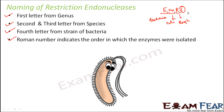Currently we have more than 900 restriction enzymes isolated from over 200 strains of bacteria. Without a specific naming convention it would be very difficult to distinguish between them. That is why we follow such a specific convention for naming these enzymes, and each enzyme has a specific recognition sequence.